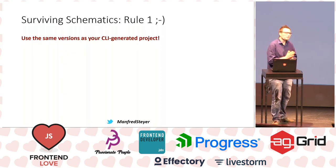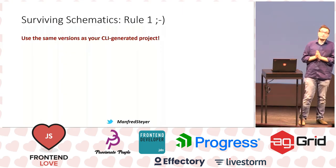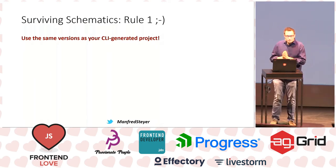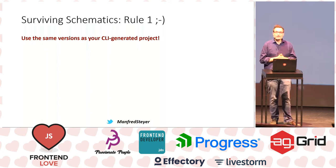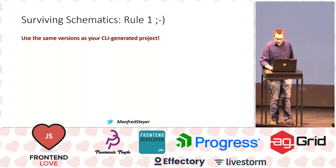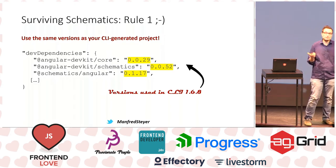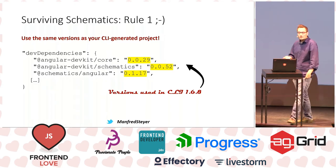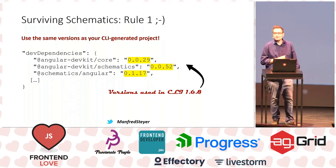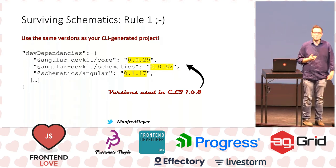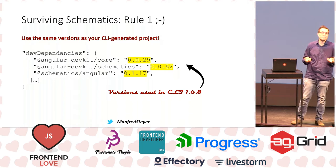Now one thing is quite important — I'm calling it Manfred's First Rule of Surviving Schematics: please make sure that the used versions are the same as in your CLI-generated project. That means when you are using Angular CLI 1.6.8, which was the newest version some days ago, then you have to use those corresponding versions of schematics and the dependent tools. Otherwise, hell breaks loose when you are mixing and matching versions — you know that from other areas of JavaScript development.